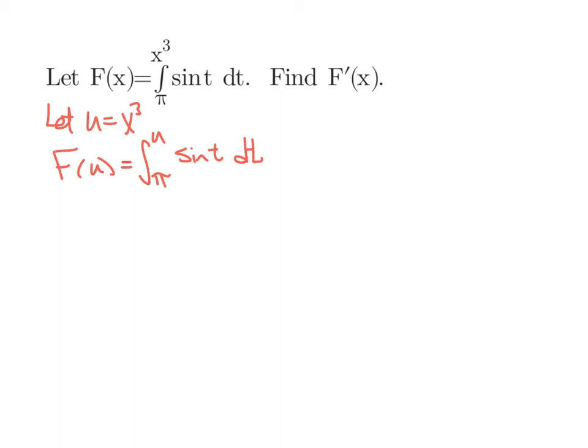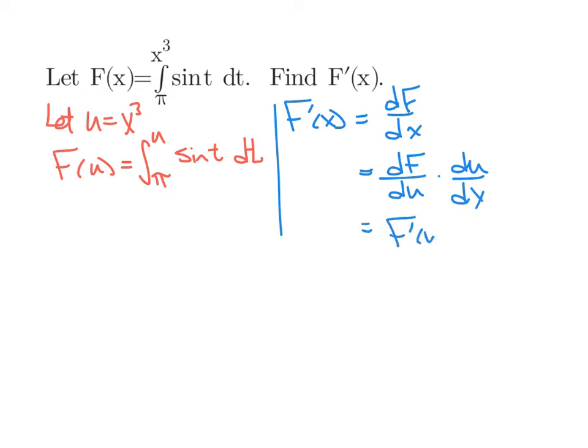Then, we'll have f of u is the integral from pi to u times sine of t dt. And we still want to find f prime of x, though. So, one thing that we can pay attention to is what is f prime of x? You know, using that other notation, that would be df dx. And we saw with u substitution and the chain rule, that that is equivalent to df du times du dx, or f prime at u times u prime at x.